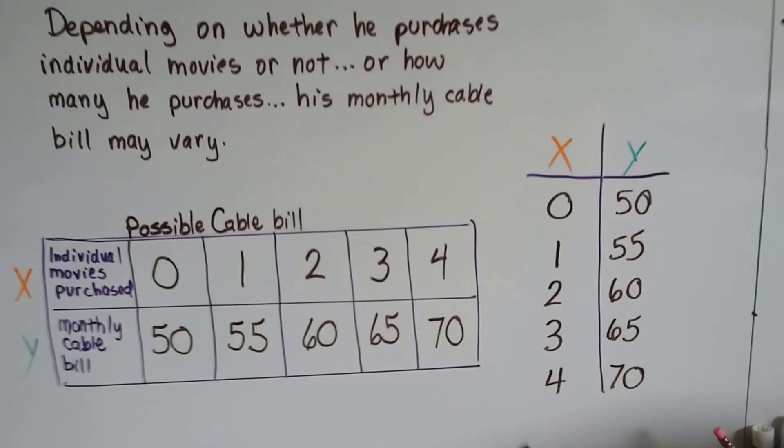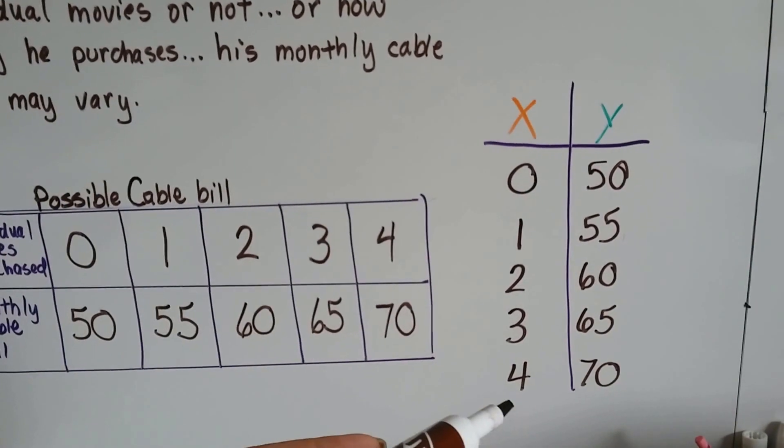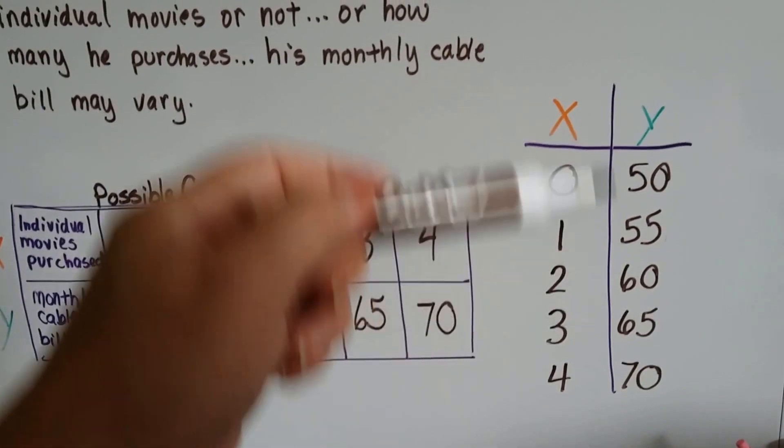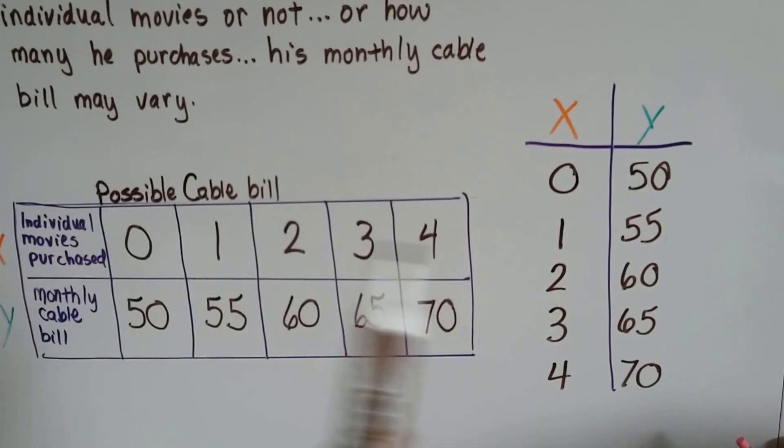We can write it vertically for our X and Y table and see we have the same figures. It's just going vertically instead of horizontally.